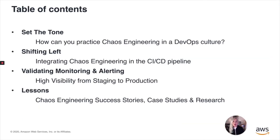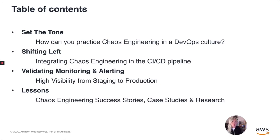Today we're going to talk about a few things. First off, we'll set the tone: how can you practice chaos engineering in a DevOps culture? Then we'll talk about shifting left, integrating chaos engineering in the CICD pipeline. Then we'll talk about validating, monitoring, and alerting — high visibility from staging to production, not just production. Then we'll close off with lessons, sharing some chaos engineering success stories, case studies, and research.